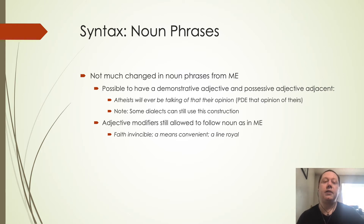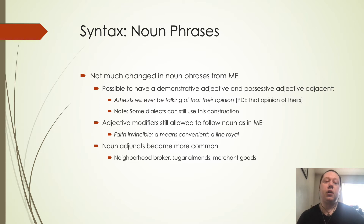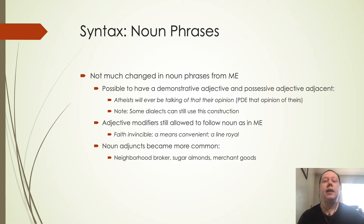Adjective modifiers can still follow nouns as in Middle English — something we don't really see in present-day English. So 'faith invincible,' 'a means convenient,' 'a line royal' are examples where the adjective still comes after the noun. This is still common but starting to change. Noun adjuncts also become more common, where nouns describe other nouns — things like 'neighborhood broker,' 'sugar almonds,' 'merchant goods' — using a noun to function as an adjective becomes more common during this period.